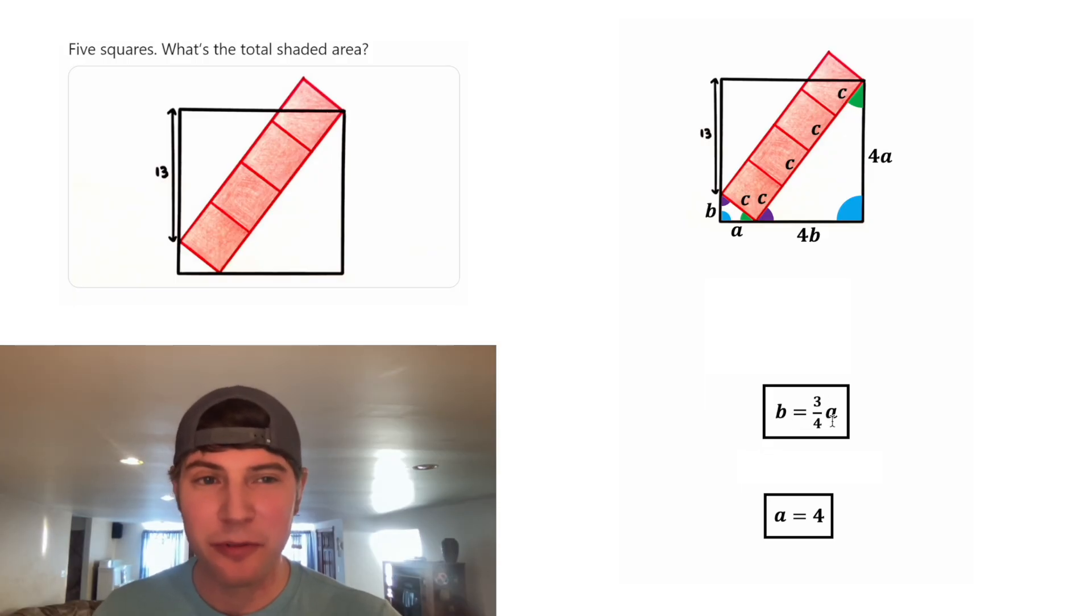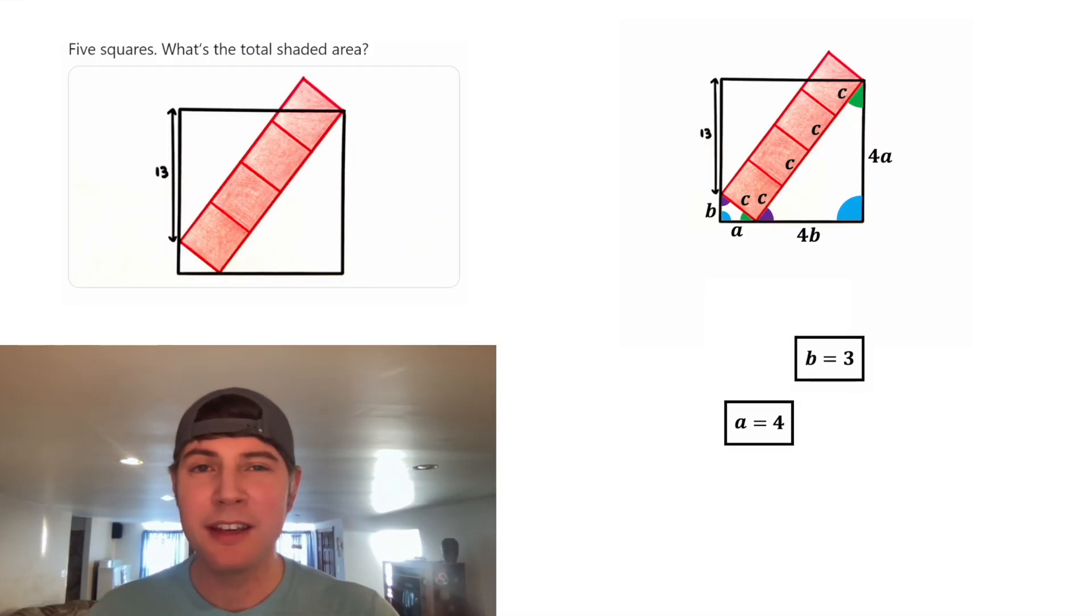Now going back to our previous box, we know B is equal to three fourths of A. A is equal to four, so in the place of this A, let's plug in four. And then when we multiply this three fourths times four, the fours are going to cancel each other out. We end up with B is equal to three.